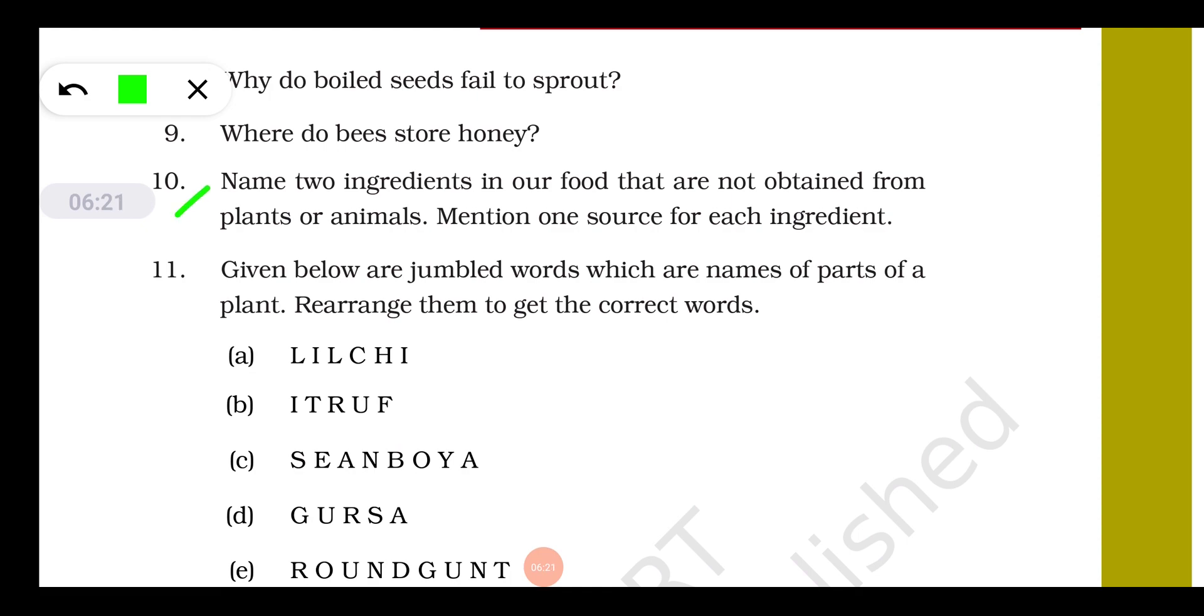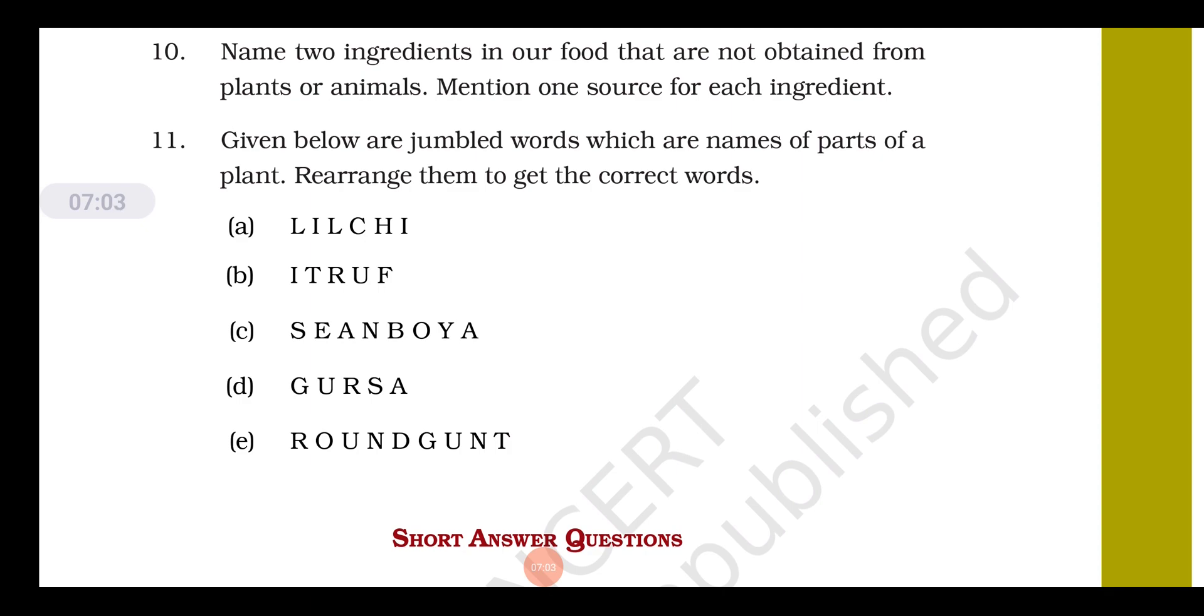Question number ten: name two ingredients in our food that are not obtained from plants and animals. Number one component is water, very essential. Without water no life, but it is not obtained either from plants or animals. We get water from rain, from river, from tap, from wells. Next essential component of food is salt. We don't get salt from plants or animals. We get it from sea water. When sea water is allowed to evaporate, then at the end we get salt, and this salt is purified and supplied to the market.